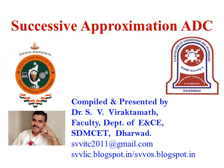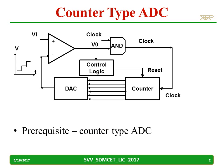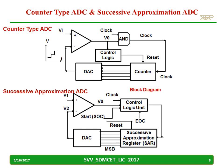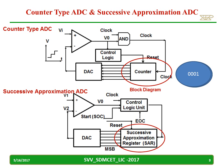In this video we discuss the successive approximation ADC working using a block diagram. The prerequisite to understand the successive approximation ADC is a counter-type ADC. The basic difference between the counter-type ADC and successive approximation ADC is only one block: in a counter-type ADC we use a counter, while in successive approximation we use a SAR. A counter gives counting 0 0 0, 0 0 1, 0 1 1, and so on, but SAR gives a different output, which we are going to discuss in the coming slides.